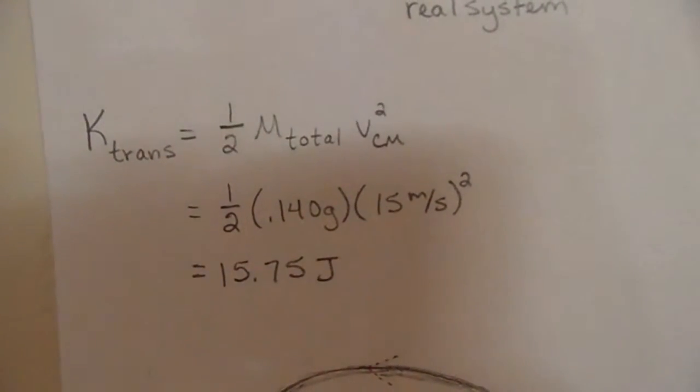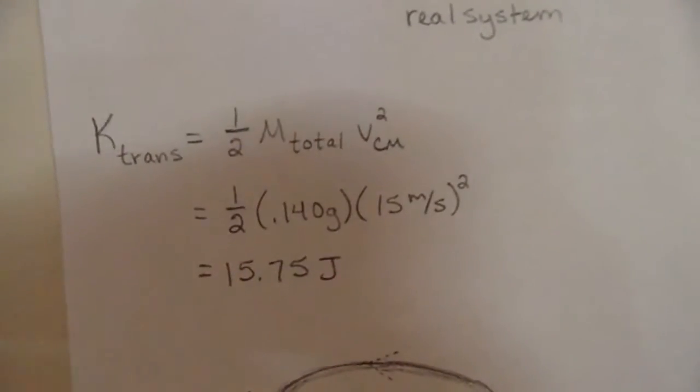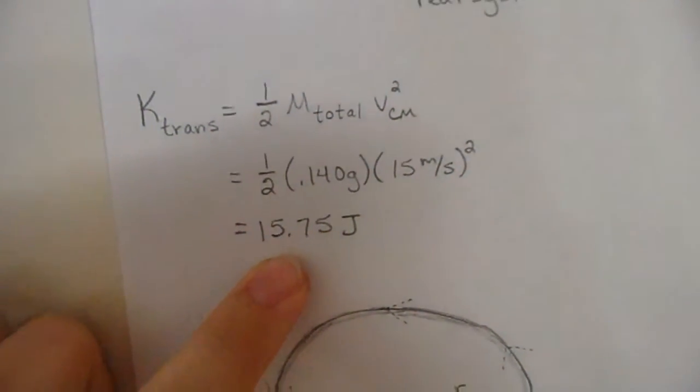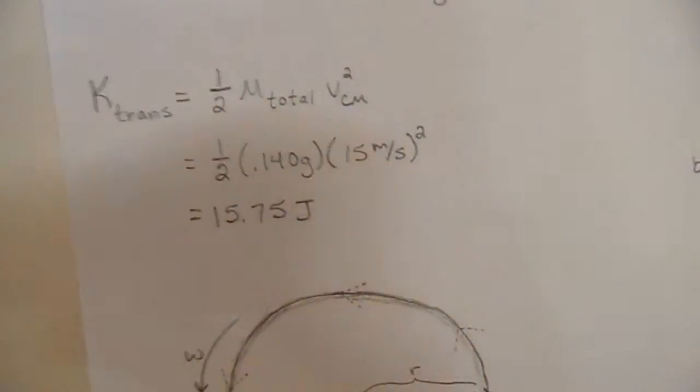Sorry, mass, the total mass times the square of the velocity. Just plug the numbers in, we get 15.75 joules for the translational energy of this frisbee.